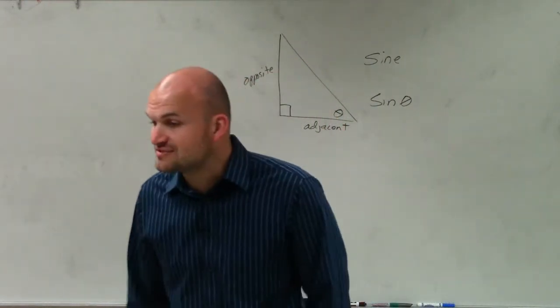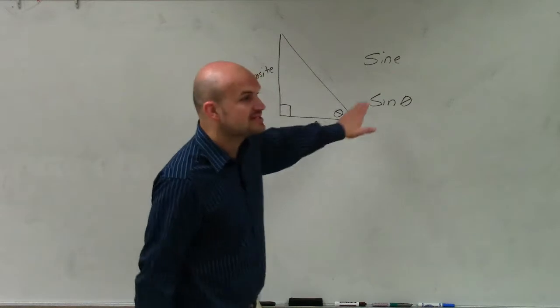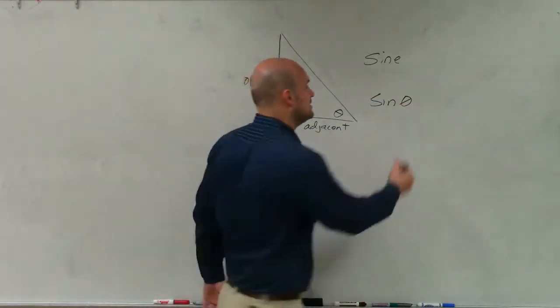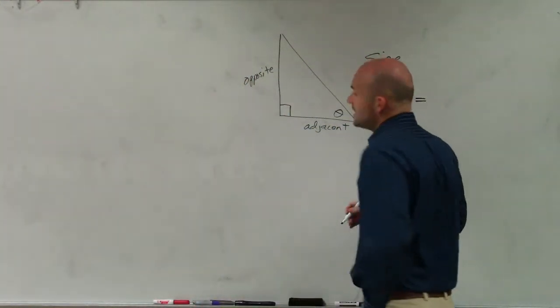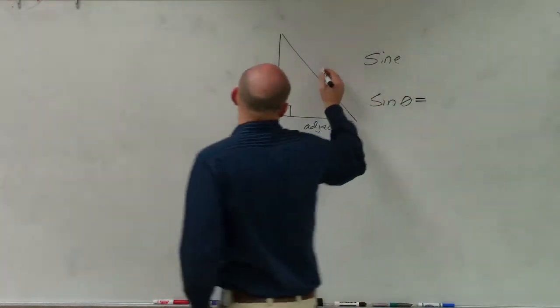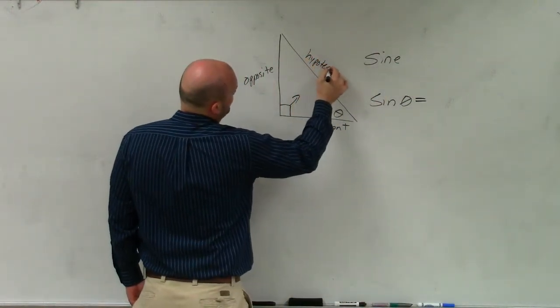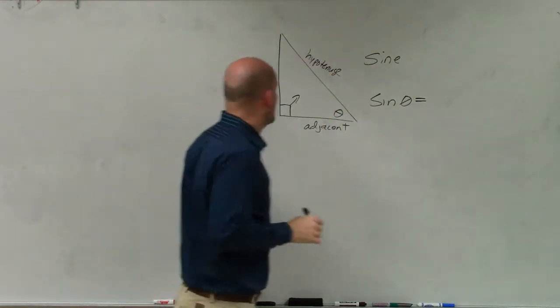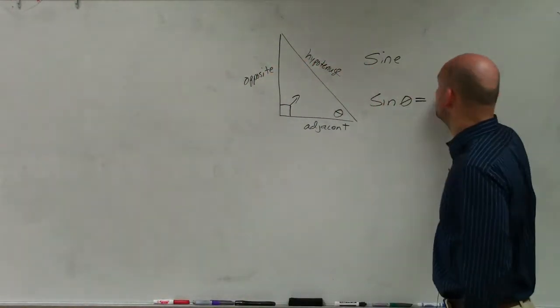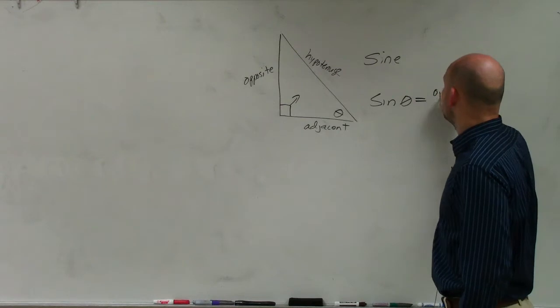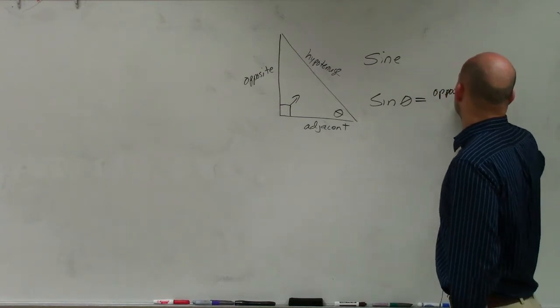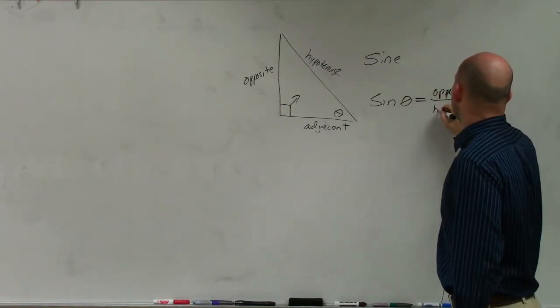And the ratio of sine of theta, the sine of your angle theta, is equal to the ratio... Oh, I forgot to label the hypotenuse. So this is the ratio of your opposite side over your hypotenuse.